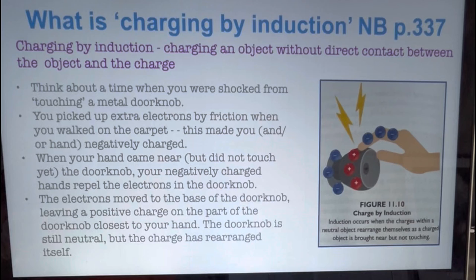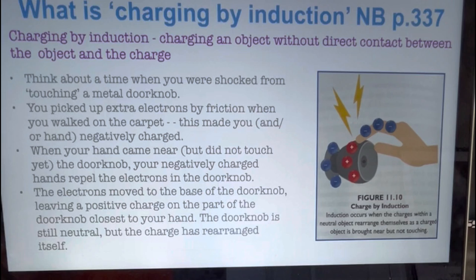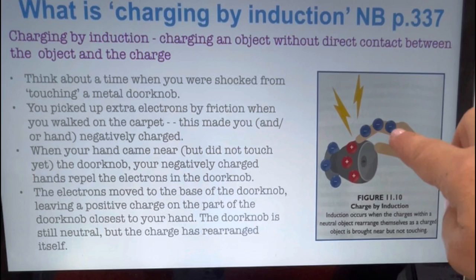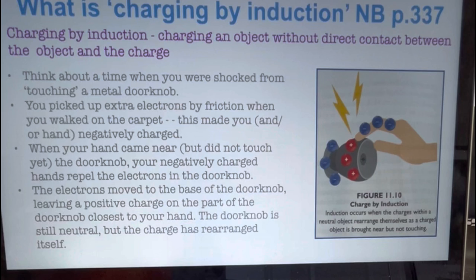Think about a time you were shocked when you touched a metal doorknob. First, you picked up extra electrons by friction walking over the carpet, so your hand became negatively charged. When your hand comes near but does not yet touch the doorknob, that net negative charge repels the electrons in the doorknob. Look at figure 11.10 — notice that the electrons in the doorknob move to the base of the doorknob. That leaves a positive charge on the part of the doorknob closest to your hand. It is still neutral overall, but the charges have rearranged within it. If you were able to separate the base of the doorknob from the handle at this point, the handle would have a positive charge. This is charging by induction.